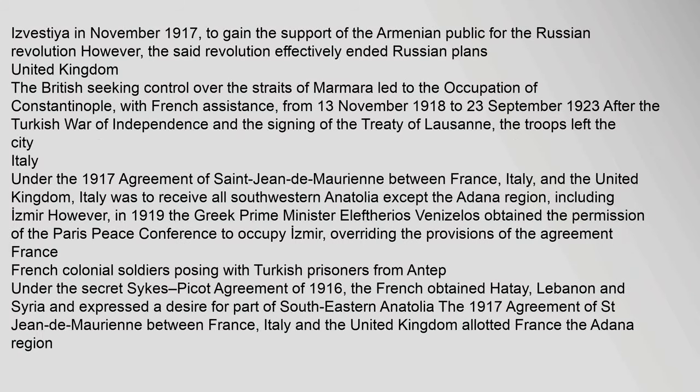Russia: In March 1915, Foreign Minister Sergei Sazanov told British and French ambassadors George Buchanan and Maurice Palaiolog that a lasting post-war settlement demanded Russian possession of the city of Constantinople, the western shore of the Bosporus, Sea of Marmara, and Dardanelles, as well as southern Thrace up to the Enos-Midia Line, and a part of the Asiatic coast between the Bosporus, the Sakarya River, and a point to be determined on the shore of the Bay of Izmit. The Constantinople Agreement was made public by the Russian newspaper Izvestia in November 1917, to gain the support of the Armenian public for the Russian Revolution; however, the revolution effectively ended Russian plans.